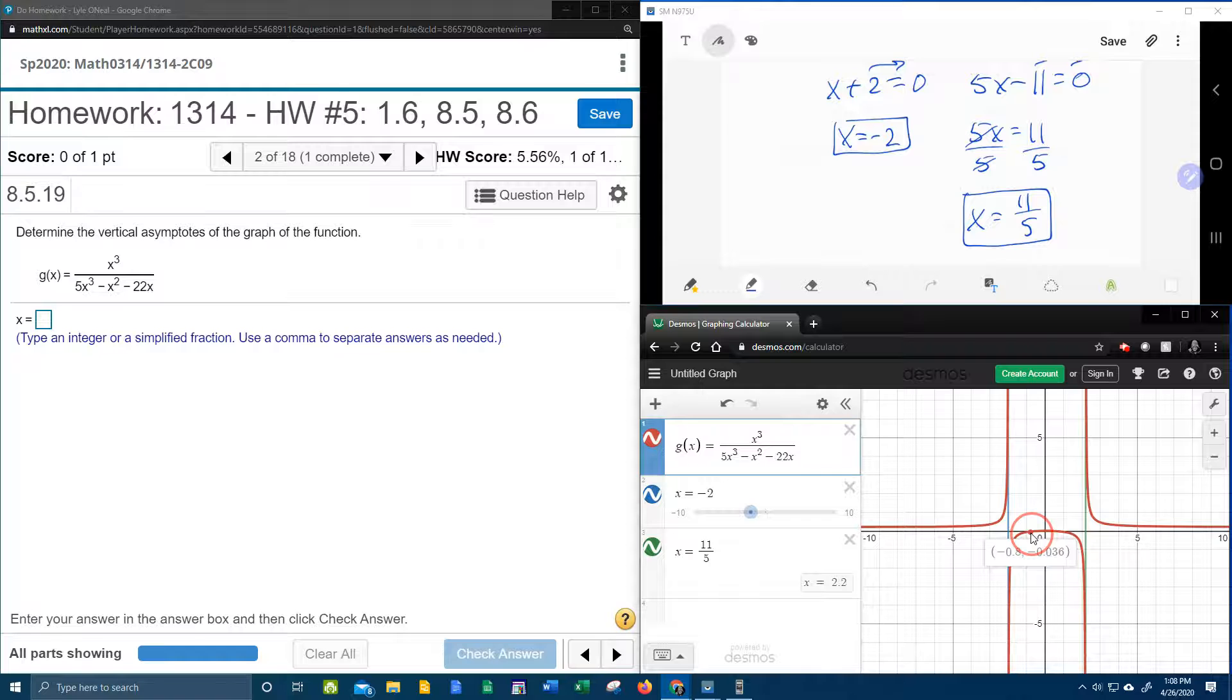Although if we click on the graph and drag over, it will tell us that, if I can get on that, it does tell us that the graph is undefined at 0, which is true.